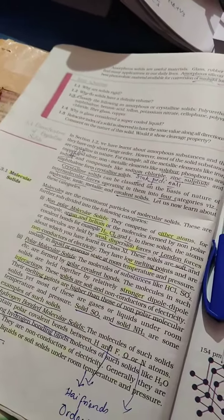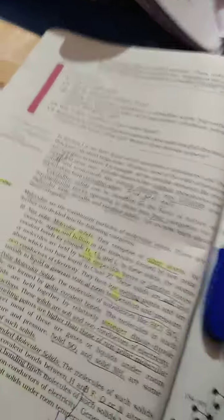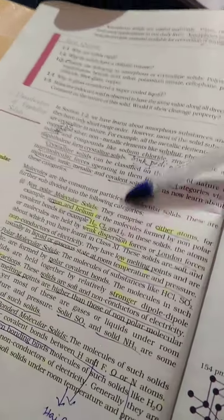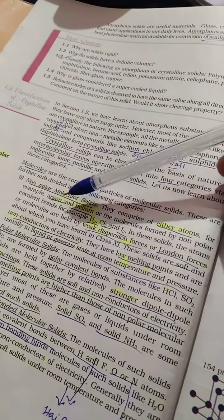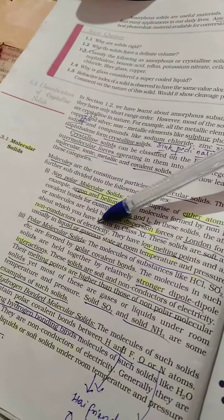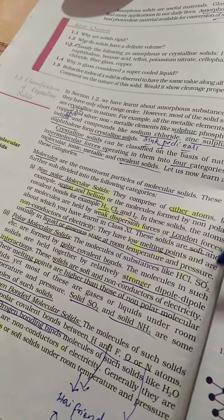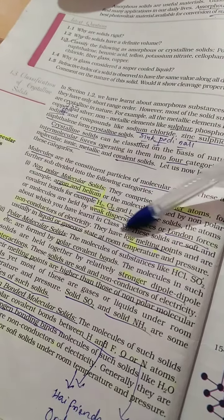Molecular solids: molecules are constituted in particular molecular solids. These are further subdivided into the following categories: non-polar molecular solids, for example argon and helium, and molecules held by non-polar covalent bonds, for example hydrogen chloride. These solids have molecules held by weak dispersion forces.